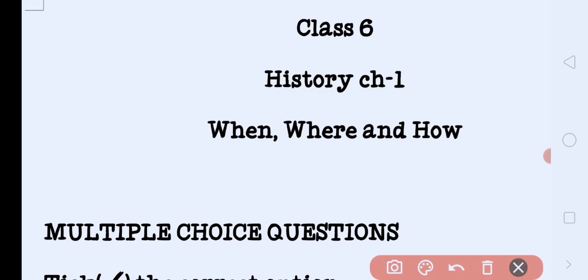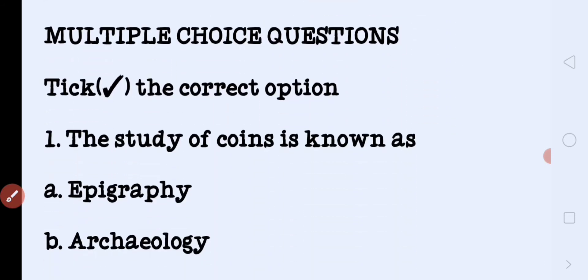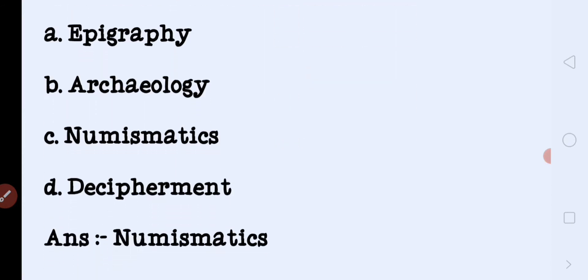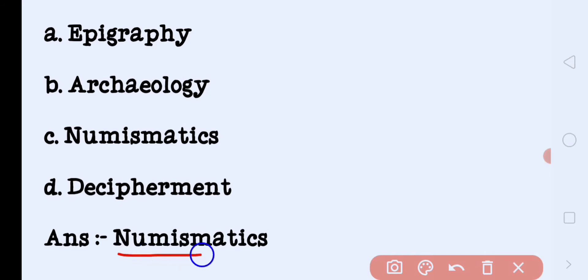Firstly we will discuss the multiple choice questions. The first question is: the study of coins is known as — with four options: epigraphy, archaeology, numismatic, decipherment. The correct answer is numismatic. The study of coins is known as numismatic.